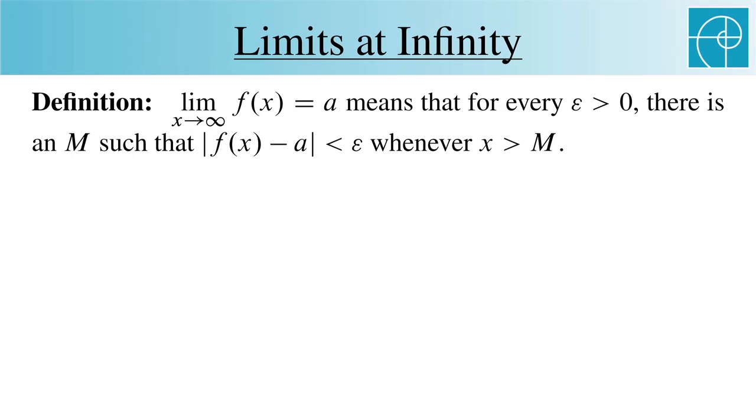To say that the limit of f as x goes to infinity, or as x approaches infinity, is equal to a means that for every epsilon greater than zero, there's an m such that the absolute value of f is less than epsilon whenever x is greater than m.